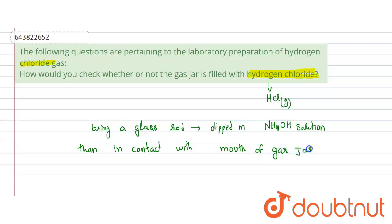Then, if white fume of NH4Cl is formed, it is HCl gas.